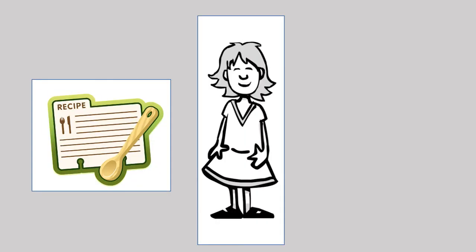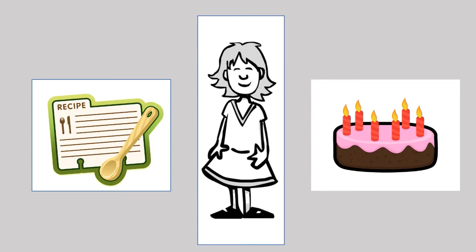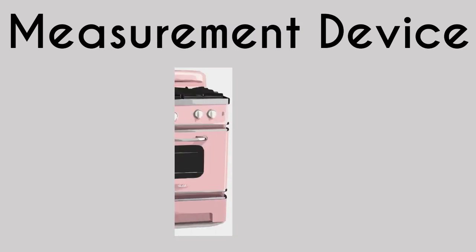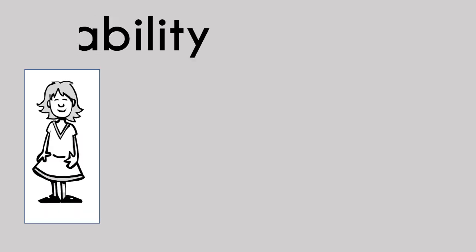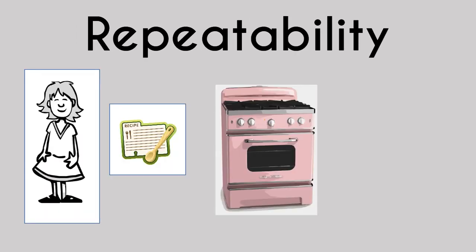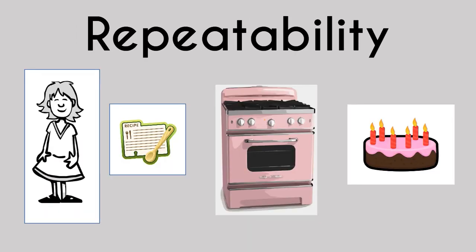Let's talk about a very simple example. Let's say I have this awesome recipe for chocolate cake from my grandma. My measurement device or tool in this example is my oven. Repeatability would mean that I can follow the recipe including required oven temperature and produce this awesome chocolate cake each time I bake it. It comes out moist, fluffy, and light just like grandma's recipe.